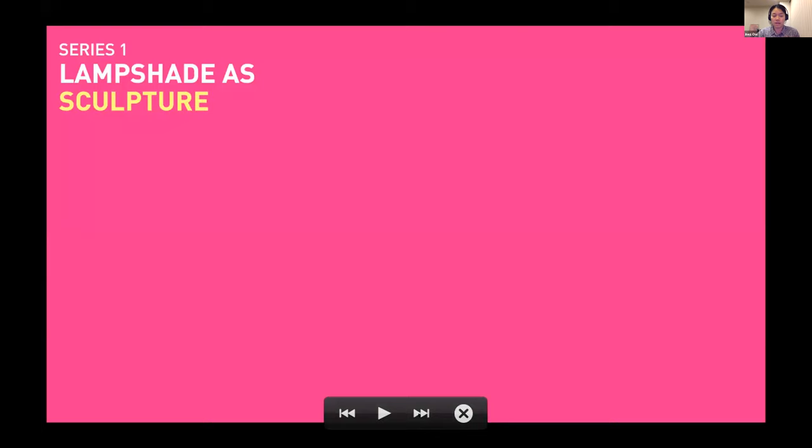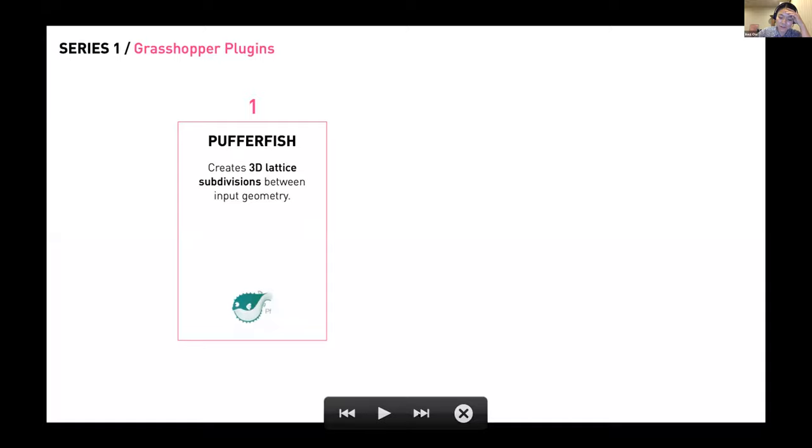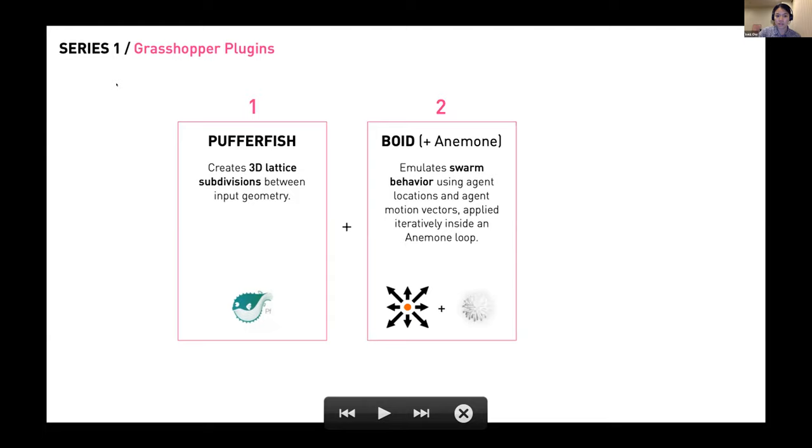The first series would be lampshade as sculpture. A big part of owner's class involved learning many different grasshopper plugins, which I've never really picked up before. Part of my project was trying to be intentional about using each of them and understanding how each of the algorithms work instead of letting it have its innate aesthetic take over. Because of that, I did not start off by defining a part and then build it up accumulatively. Instead, I started with the plugins themselves. For the first series lampshade as sculpture, I use Pufferfish and Boyd as the two main algorithms.